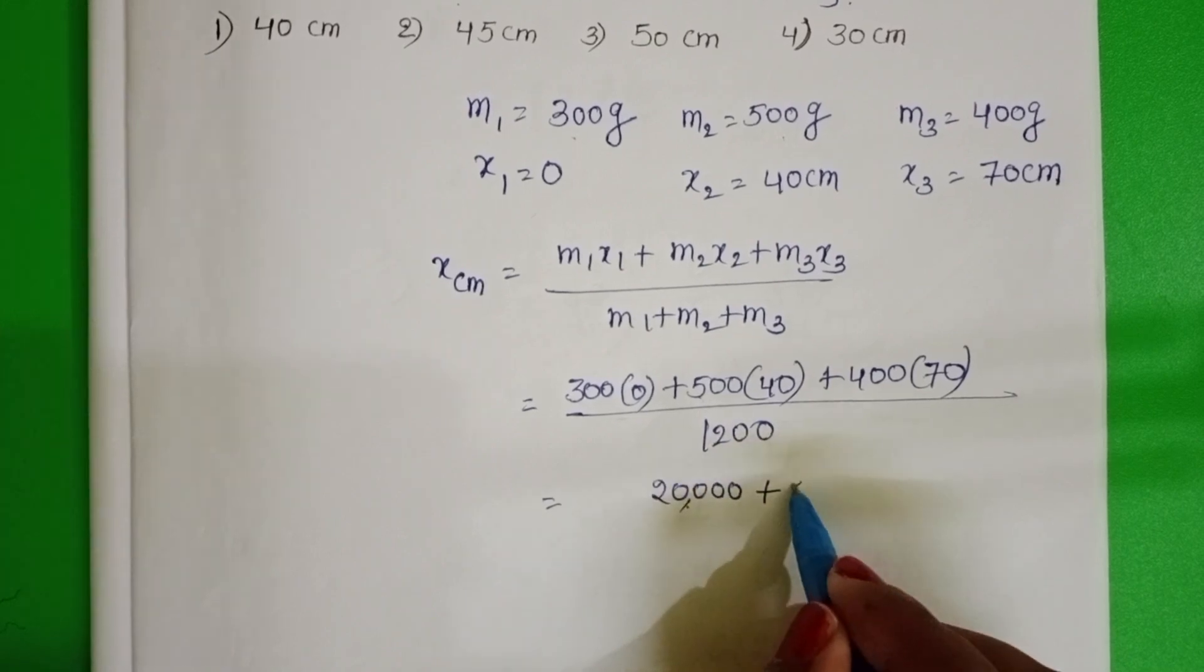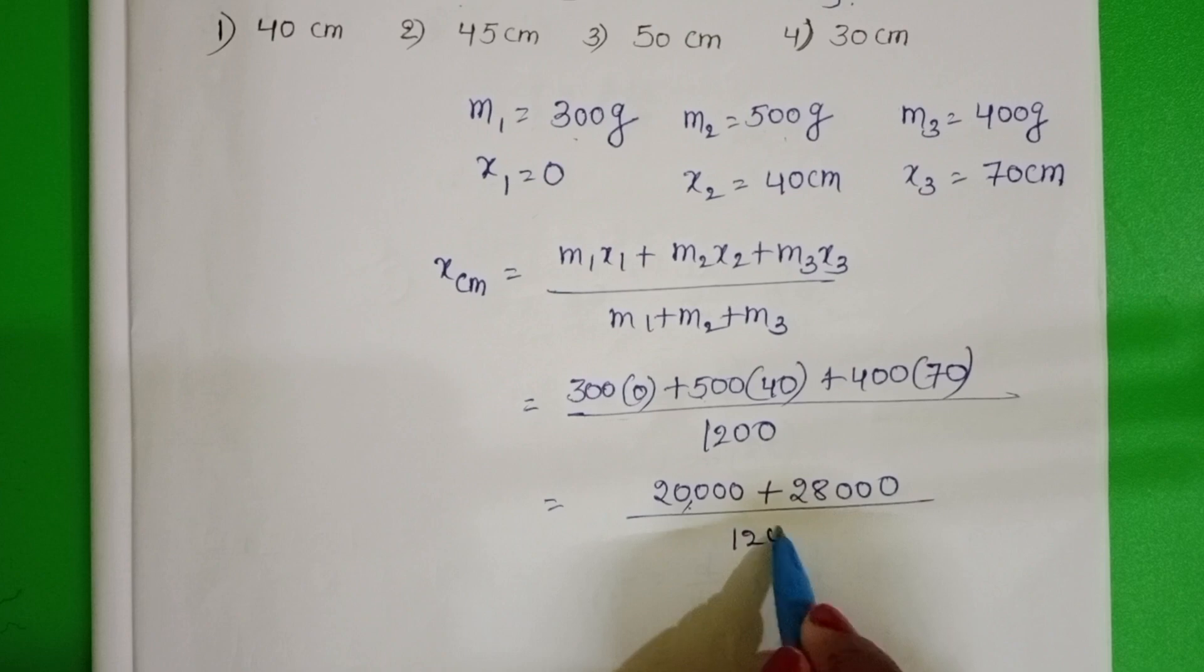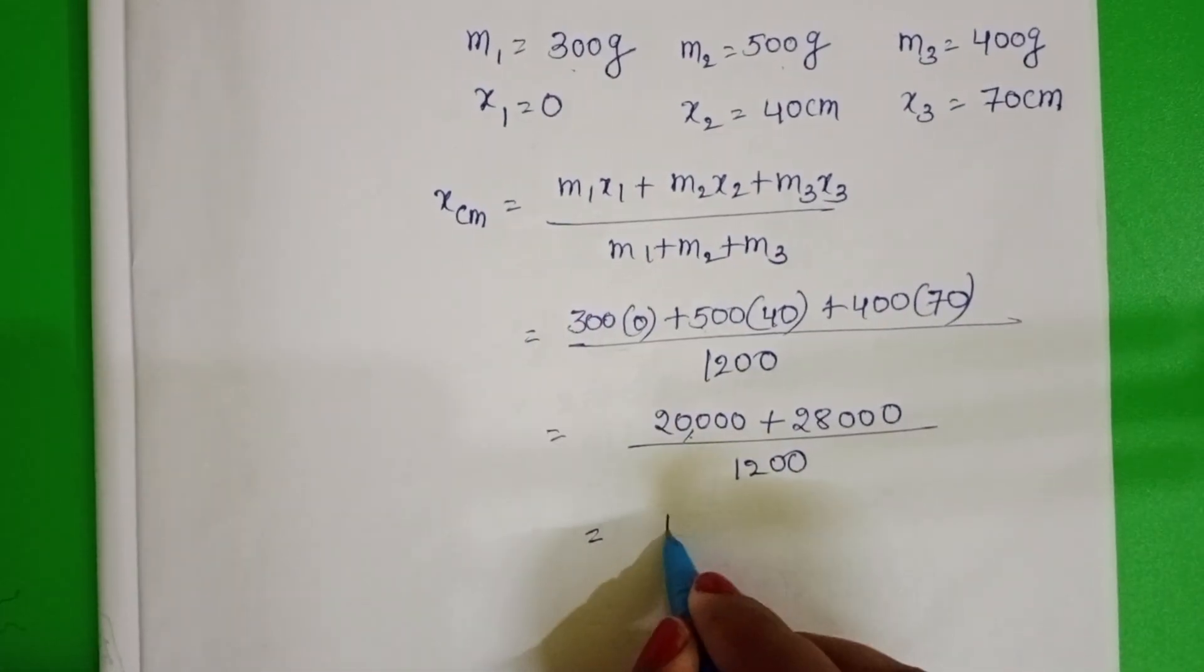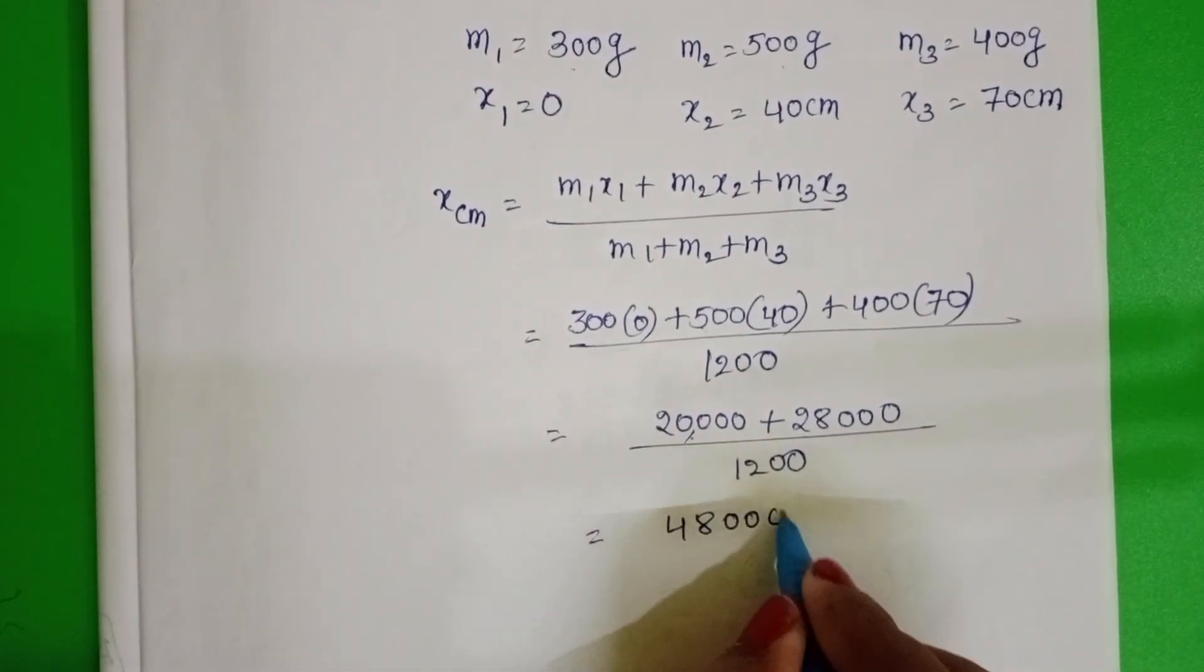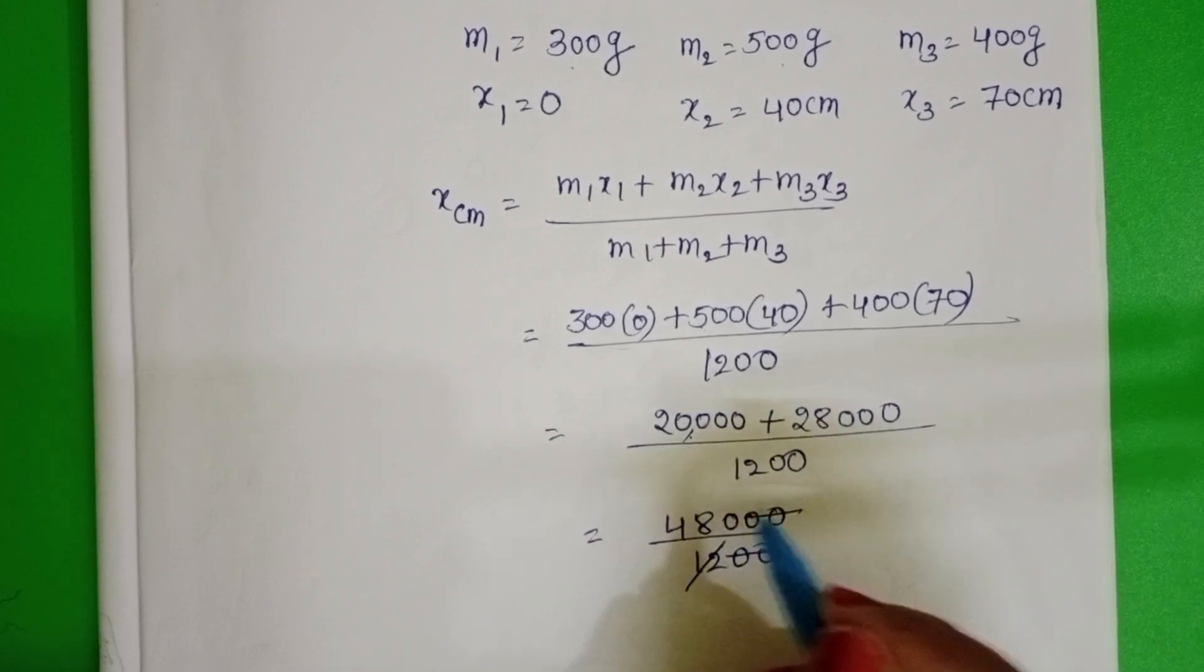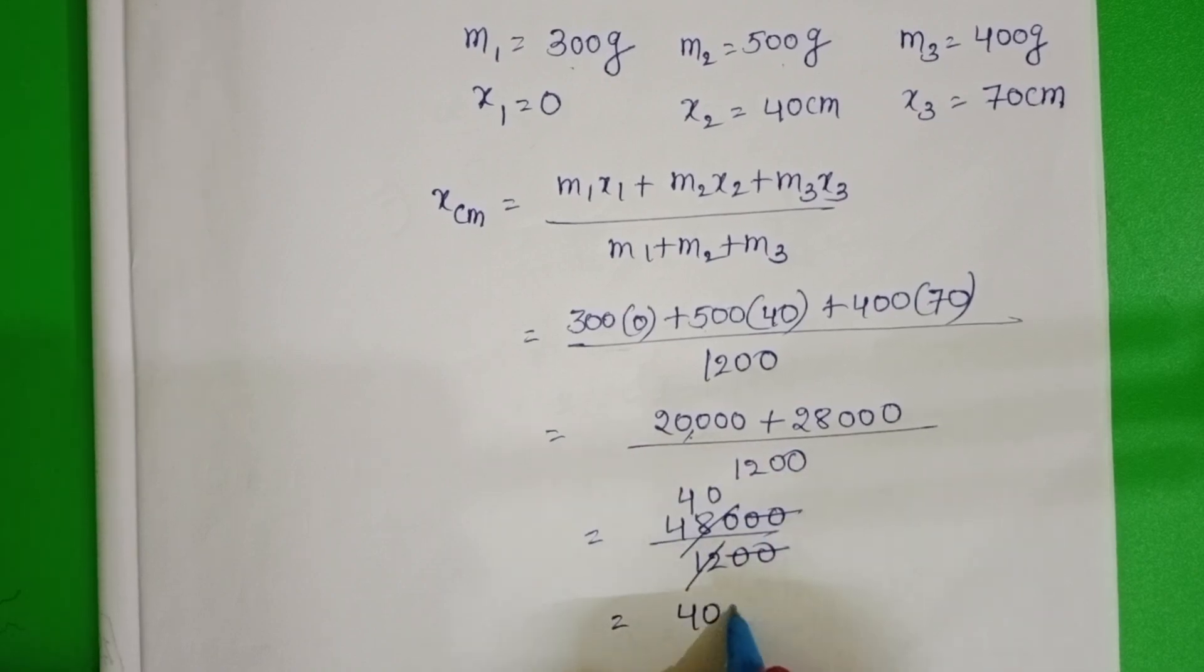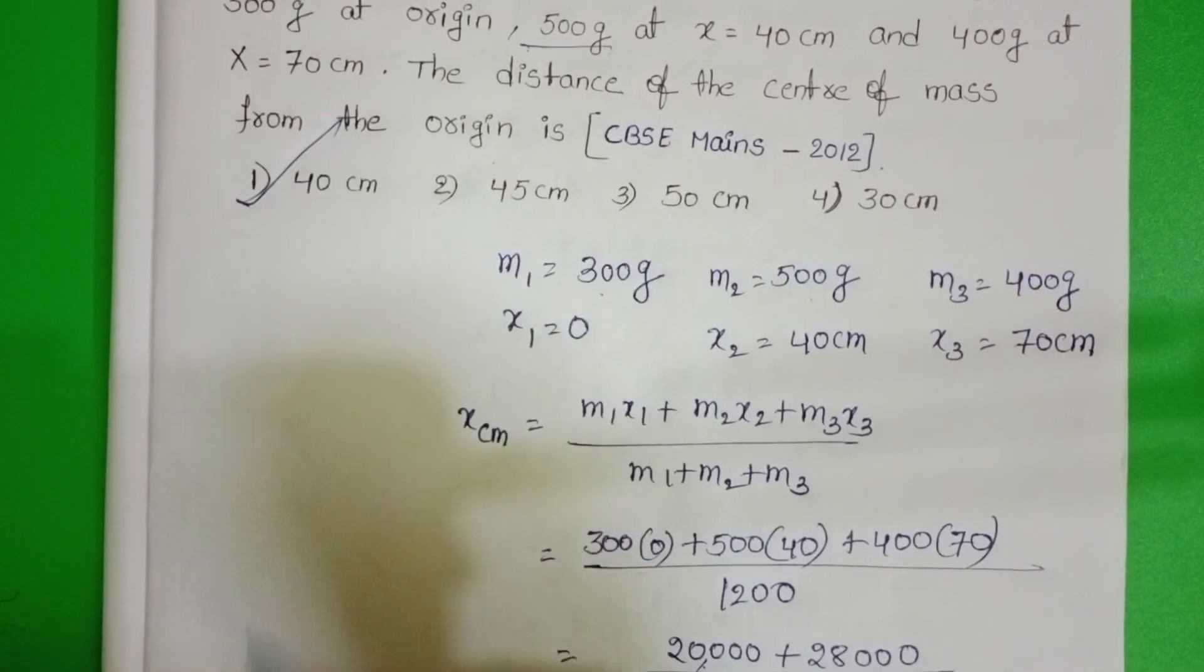20,000 plus 28,000 divided by 1200. 48,000 divided by 1200. Two zeros get cancelled. 12 goes into 48 four times. So 40 centimeters. The first option is correct.